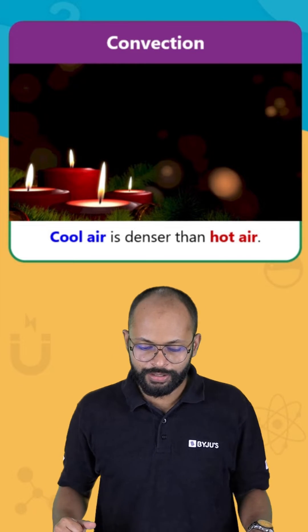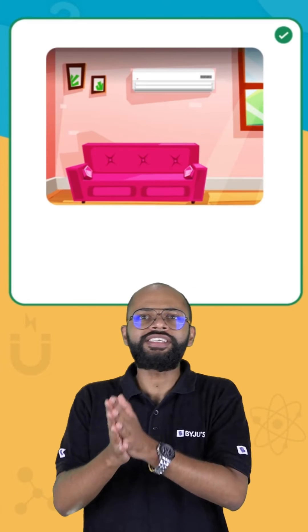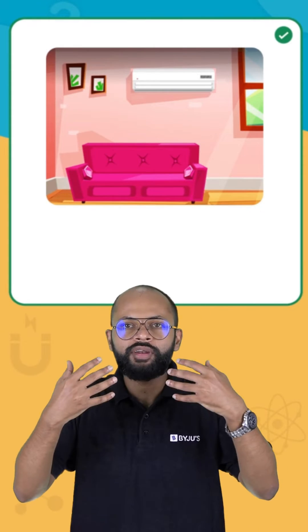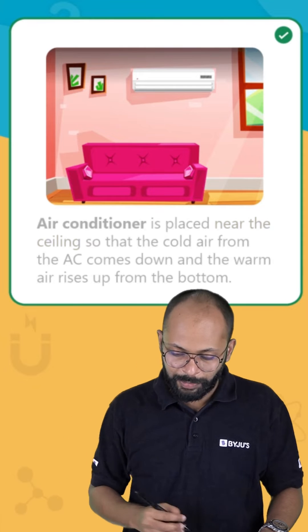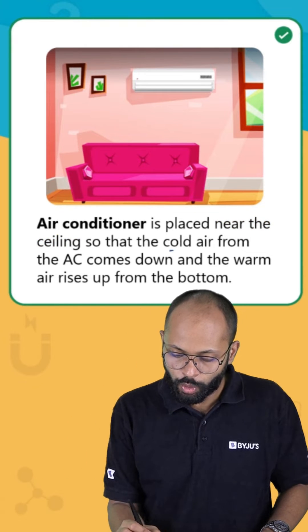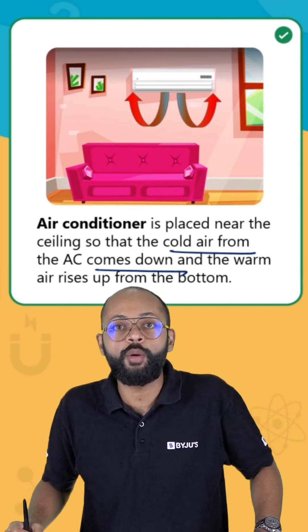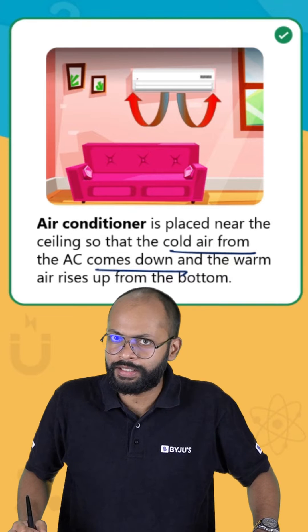Ok, so let's talk about air conditioners. The job of an air conditioner is to take in warm air and give out cold air. We place them near the ceiling so that cold air from the AC can come down and warm air can rise up from the bottom.